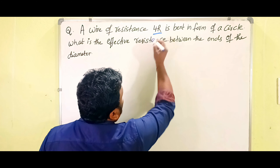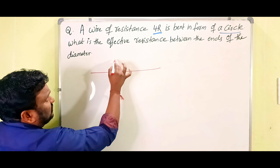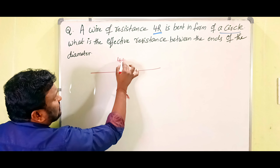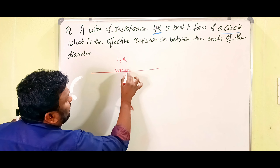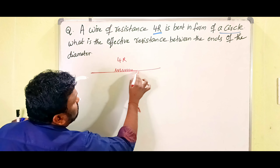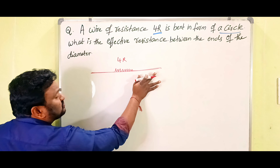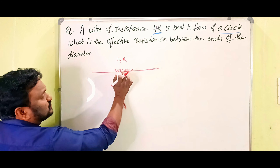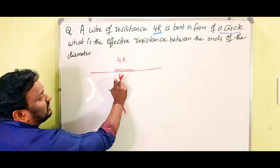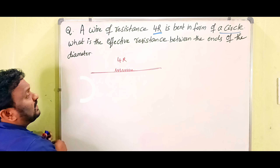The problem is: a wire of resistance 4R is bent in the form of a circle. What is the effective resistance between the ends of the diameter?